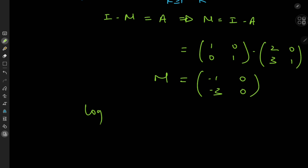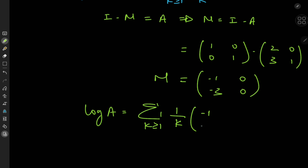So we have the logarithm of matrix A equal to the sum over the positive integers k of (1/k) times M to the k, where M is [[-1,-3],[0,0]].